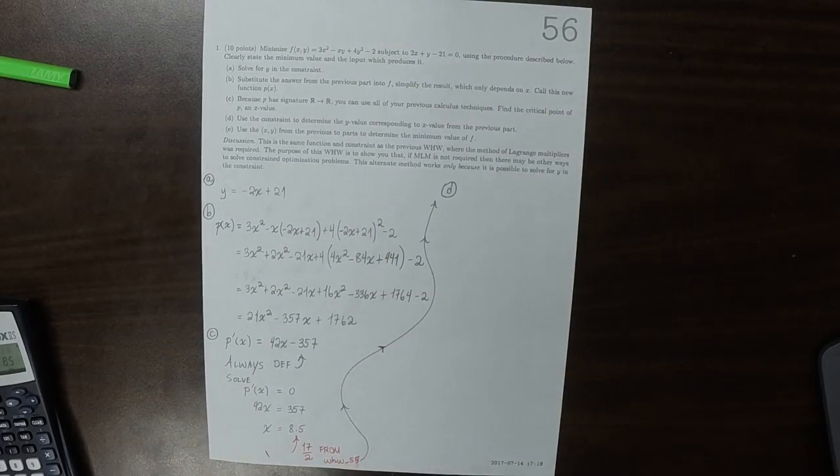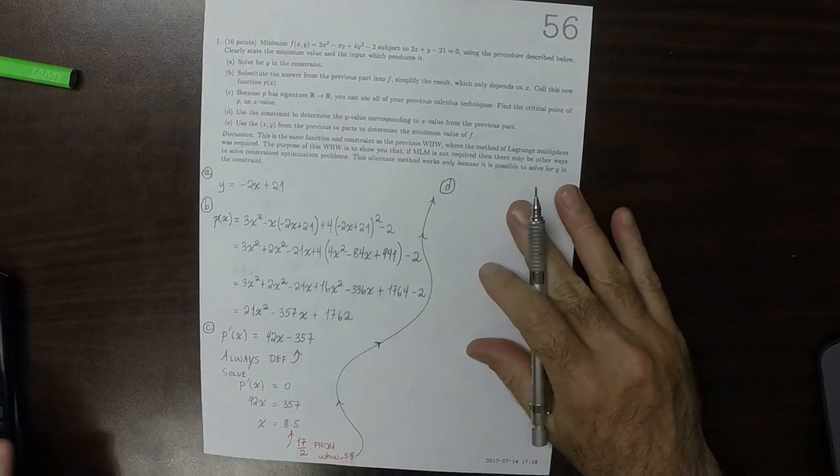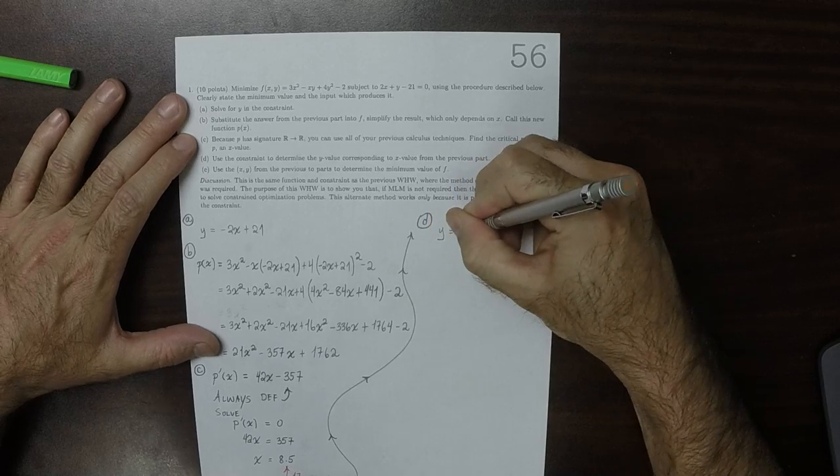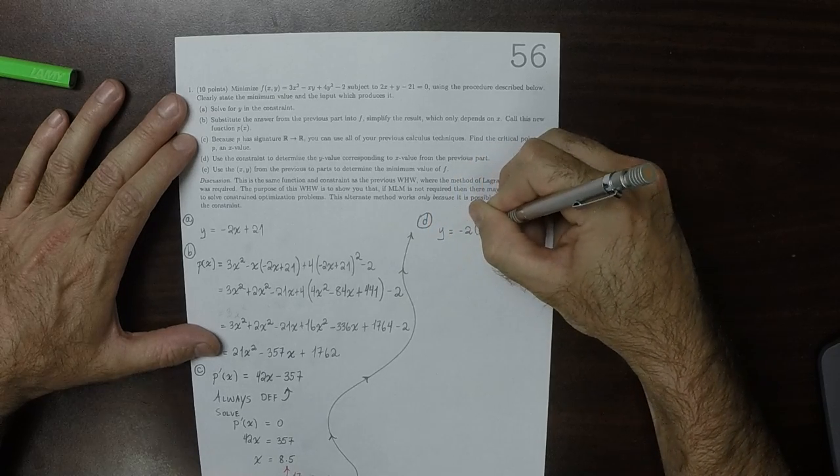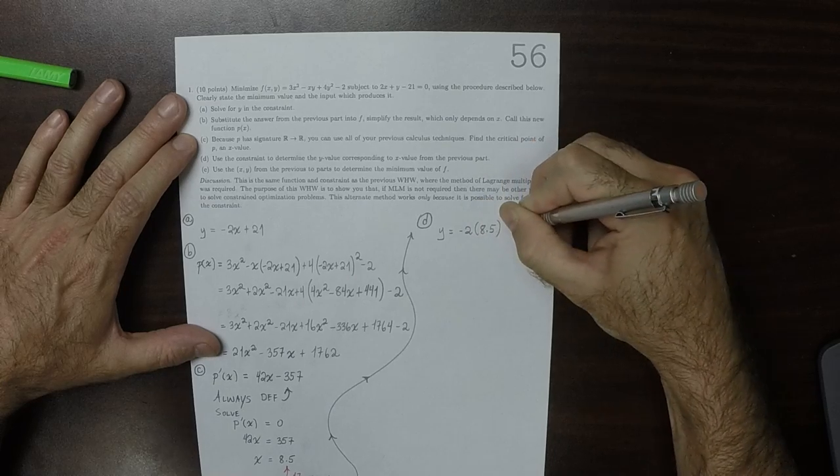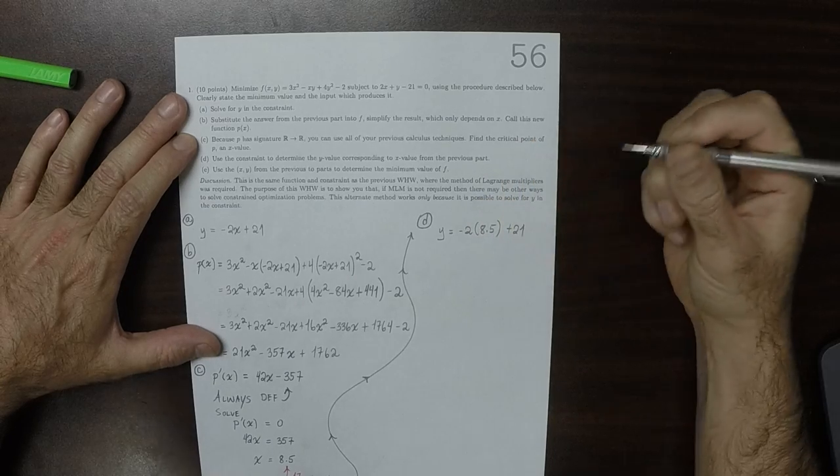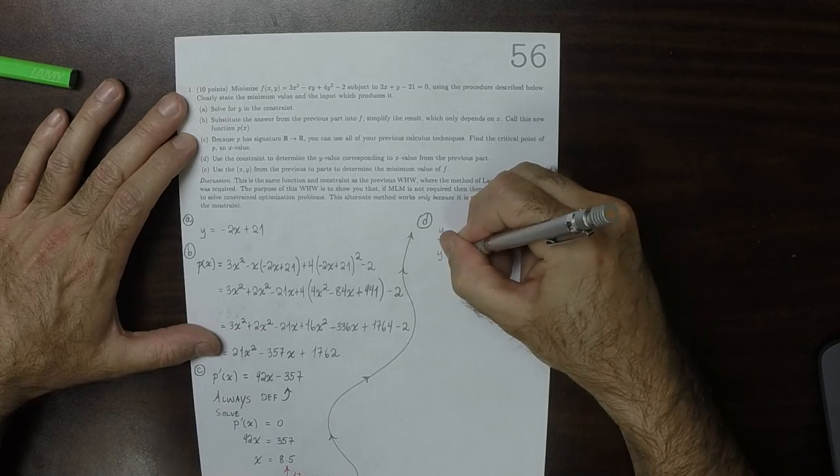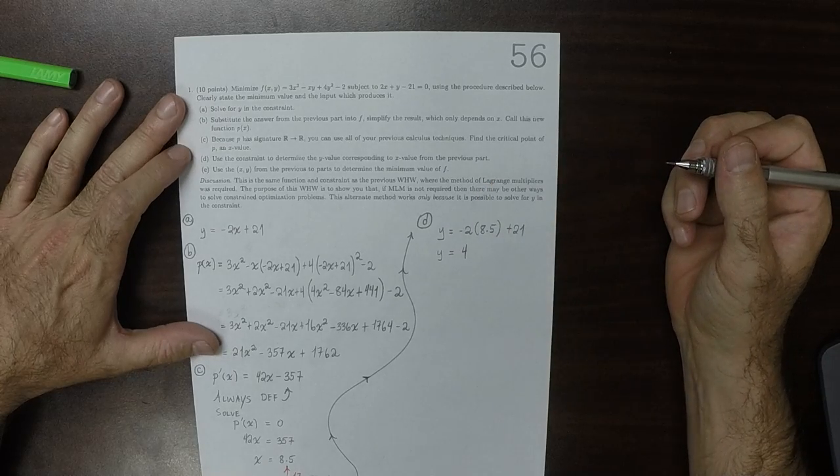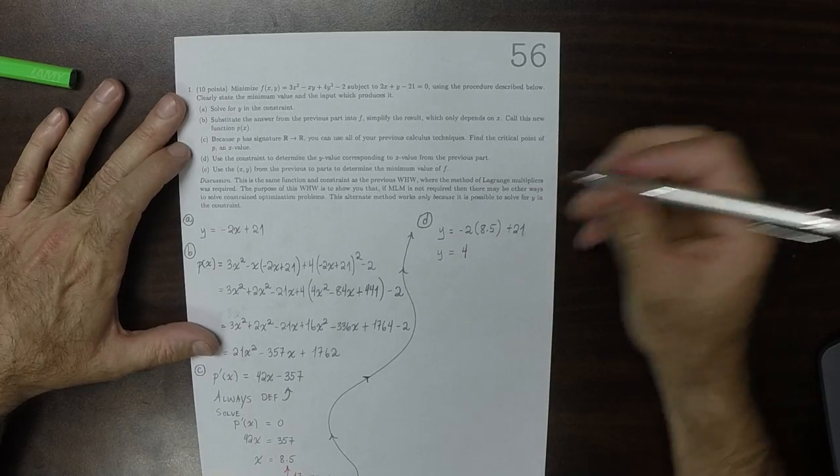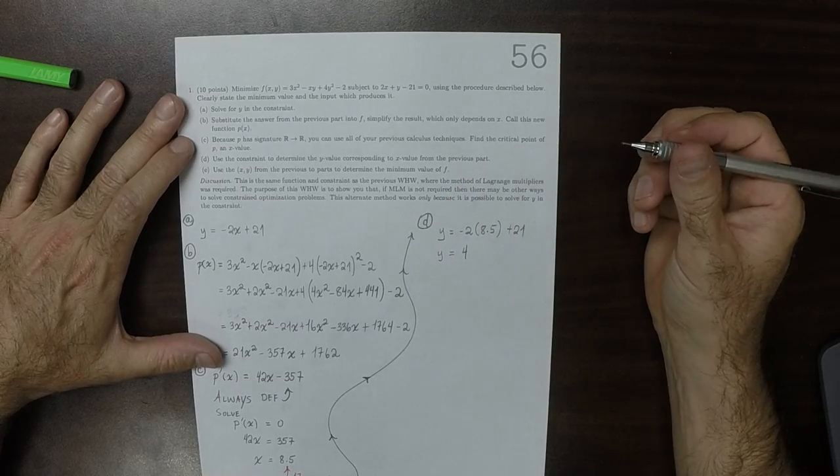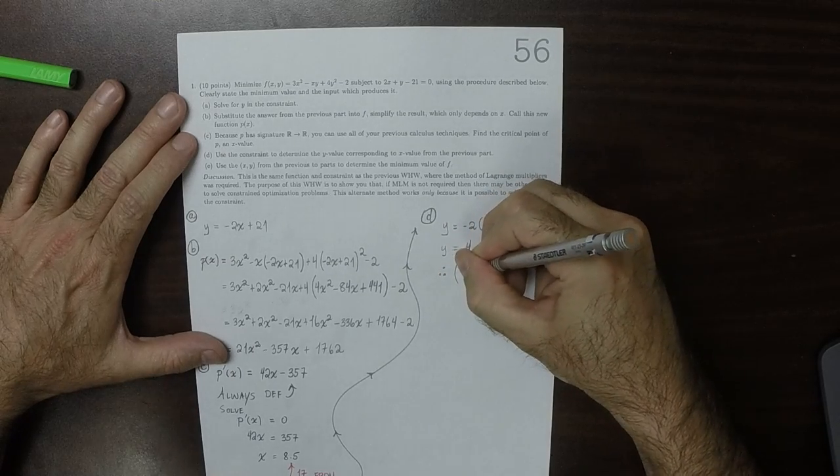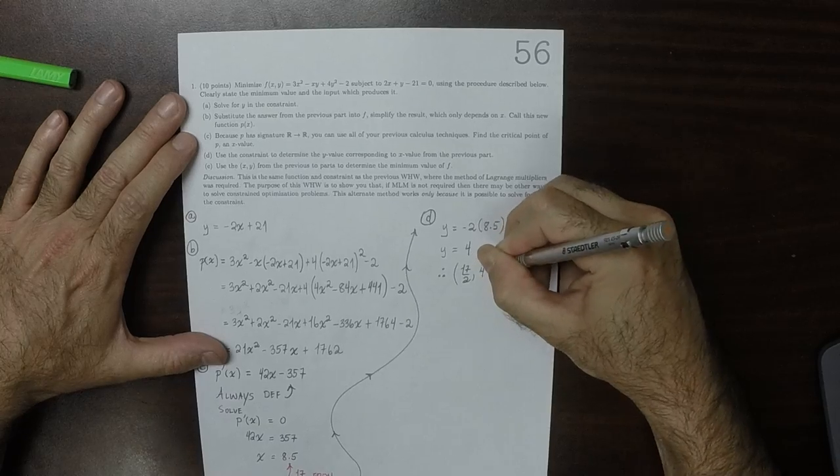Use the constraint to determine the y value. Okay, that's to say, plug this back into the constraint. Okay, so then y is negative 2 times 8 and a half plus 21. So of course, that's negative 17 plus 21, so that's 4. Therefore, the critical point is 17 halves, 4.